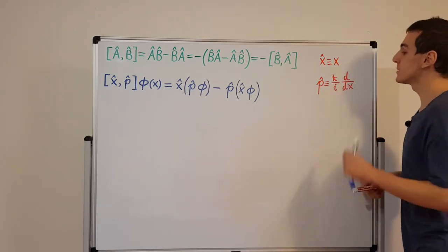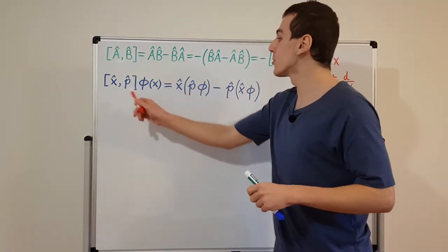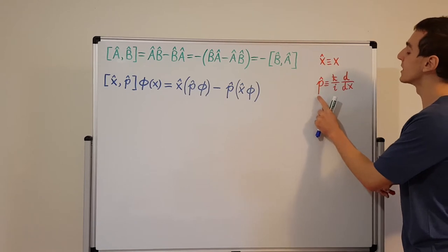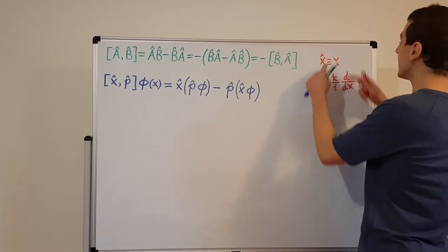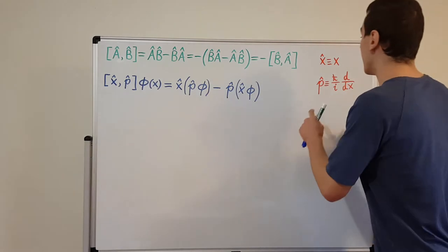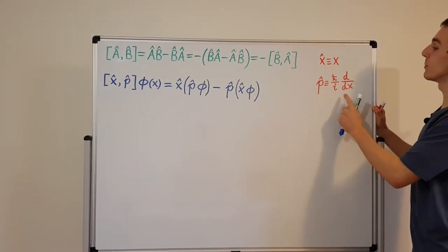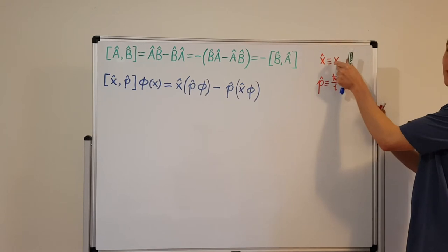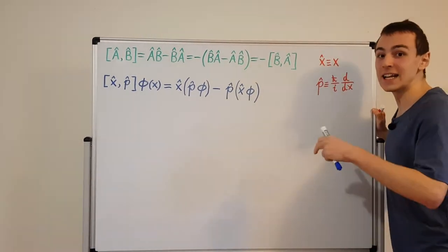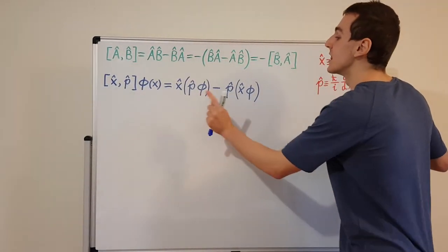Sometimes you'll see partial derivatives — that's when you also have derivatives with respect to x, y, and z, or time derivatives. But here there's no time dependence, so a total derivative suffices. These definitions for the position and momentum operators are valid in the position representation. There's also a momentum representation where the roles would be swapped, but we'll use the position representation to complete this derivation.